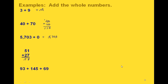And then we add the 5 and the 2 to get 7, so our answer is 78. For this last one, we could use the associative property. We could group, for example, the 93 and the 145 together and add those first and then add the 69. Or we could add the 145 and the 69 first and then add that to the 93. But I'm going to do this one in columns also.